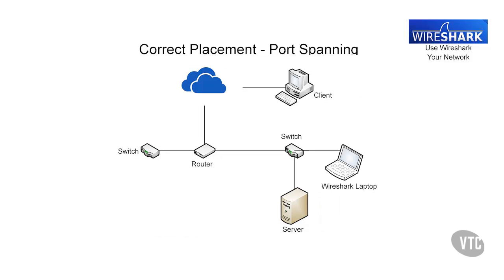If capturing traffic from the external client to the server using port spanning, the Wireshark laptop must be connected to the same switch as the server. Port spanning is then activated on the switch to mirror all traffic to and from the server's port to the port that Wireshark is plugged into. Using this method will not cause any disruption to the traffic to and from the server.